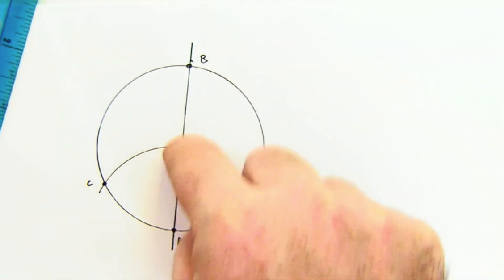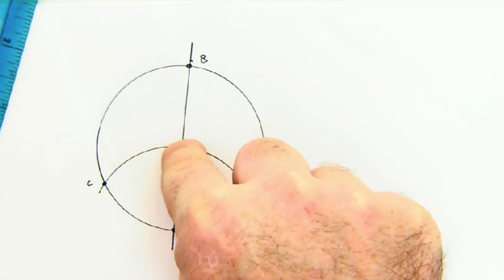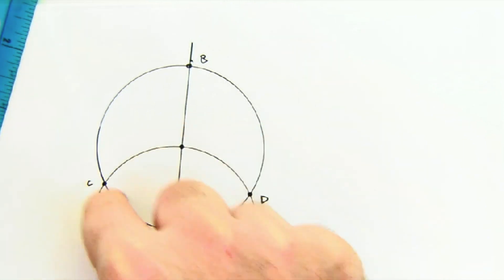There is a nice little equilateral triangle formed at the center which tells us this is 60 degrees and this is 60 degrees.